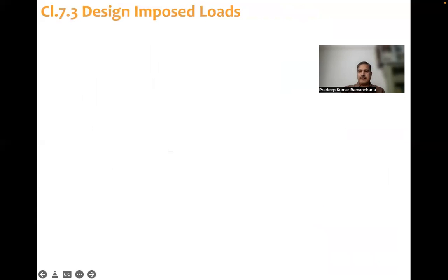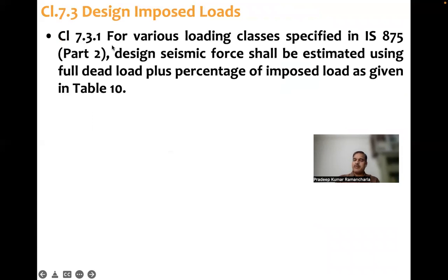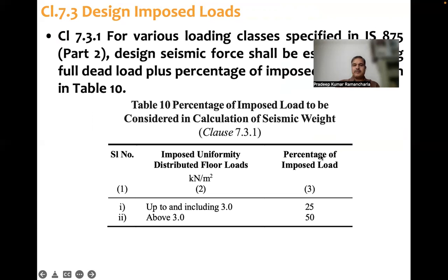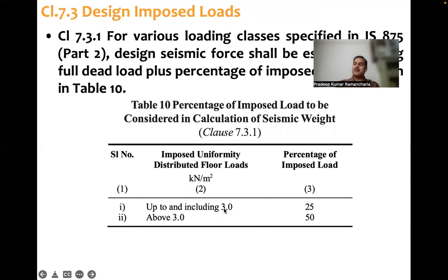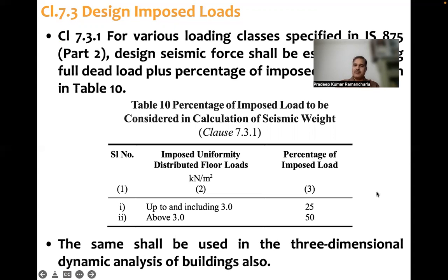So let's go into the details of clause 7.3.1: Design Imposed Loads. For various loading classes specified in IS 875 Part 2 (imposed loads), design seismic force shall be estimated using full dead load plus a percentage of imposed load as given in Table 10. If imposed load is up to 3 kN per meter square (including 3 kN/m²), then 25% of live load is considered. If it is above 3 kN per meter square, 50% of live load is considered for computation of earthquake force. This same table applies to both 2D and 3D analysis of the building.